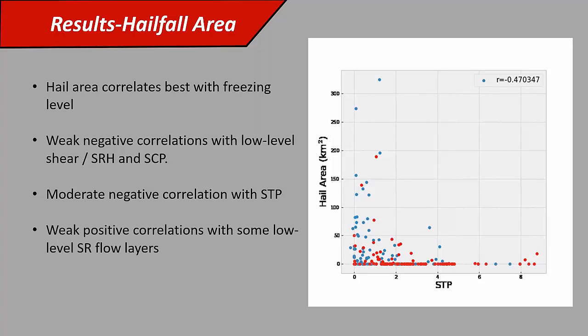It seems generally like if you have an environment with less favorable low-level shear and a less favorable environment in general, you're more likely to have larger hailfall areas. There's also a modest negative correlation with STP, which matches with that. There were also some weak positive correlations with low-level storm-relative flow layers, and I bring that up because it's different than what we saw with SRH. You kind of expect those two to have the same sign because storm-relative flow is an important component of SRH, but we weren't finding that here, and that was curious.